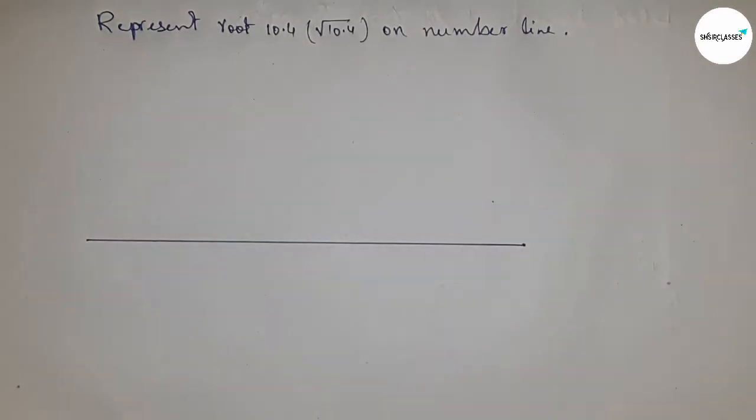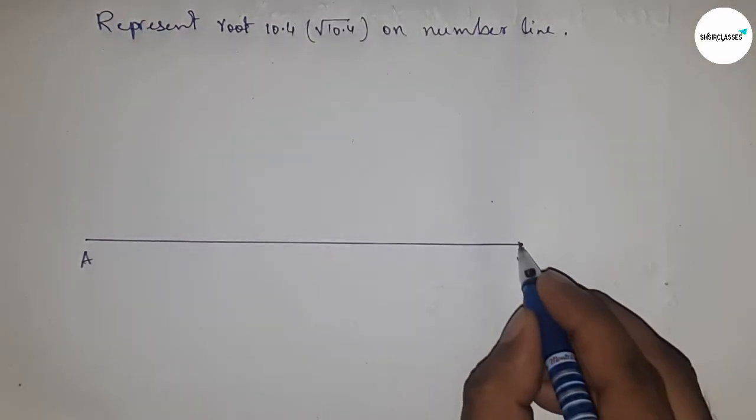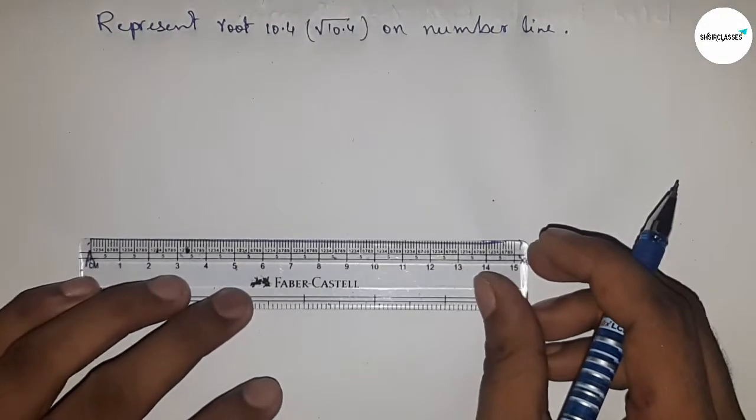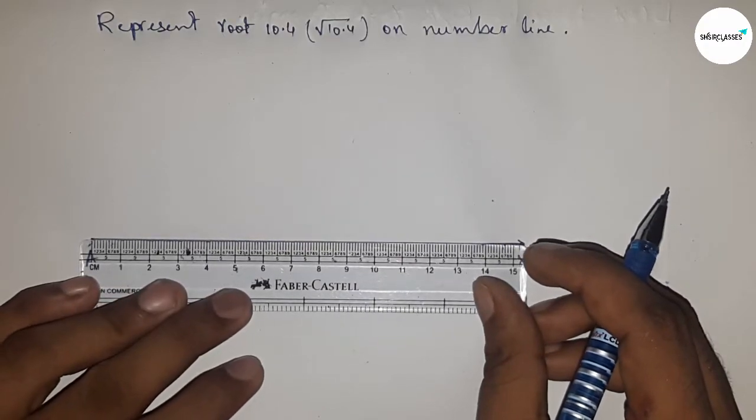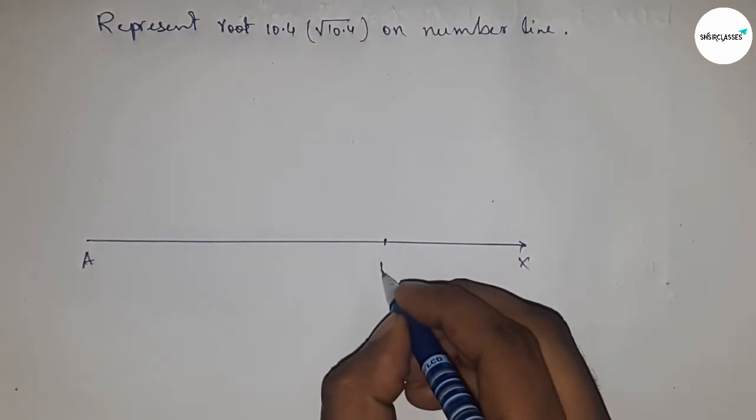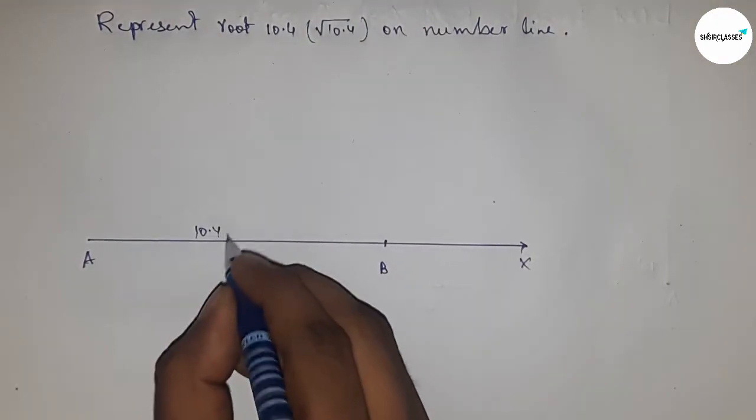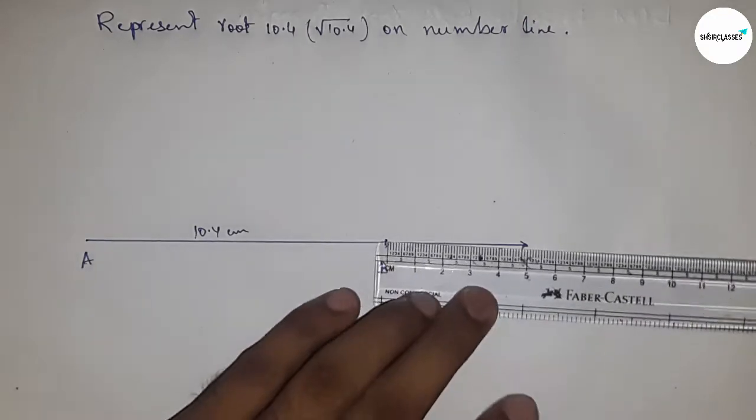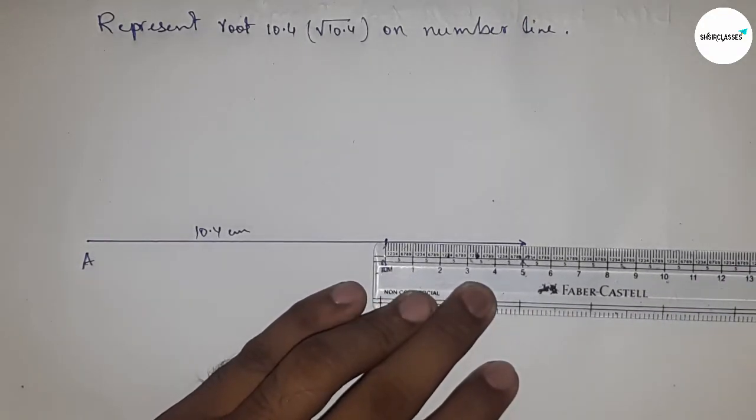This is AX line. Next, taking 10.4 cm by using scale, and taking this as point B. So AB is 10.4 cm. Next, marking the numbers on the line from B to X by using scale.